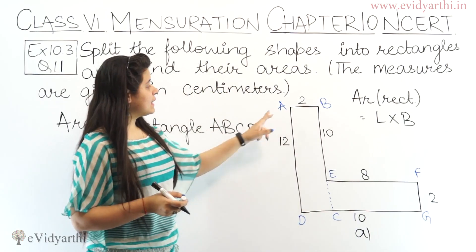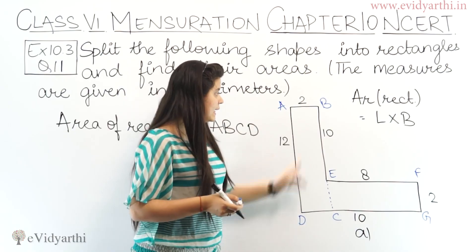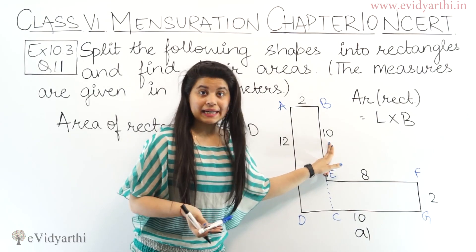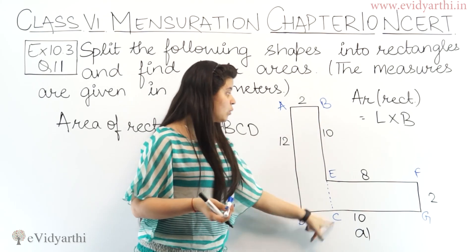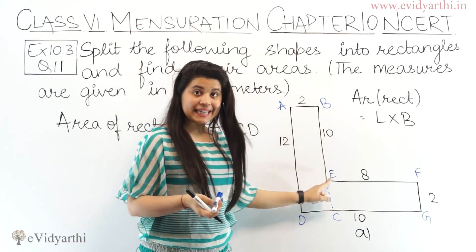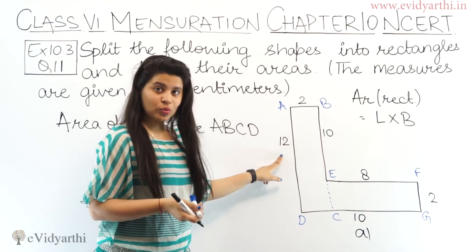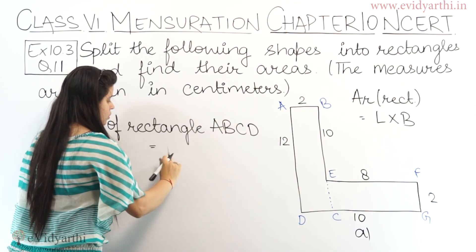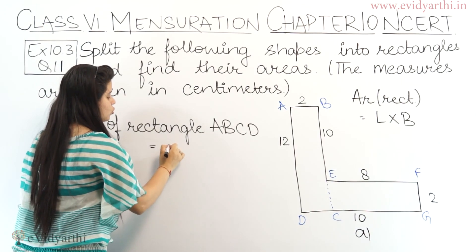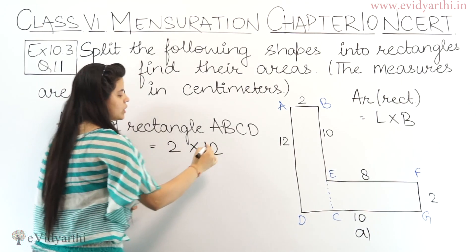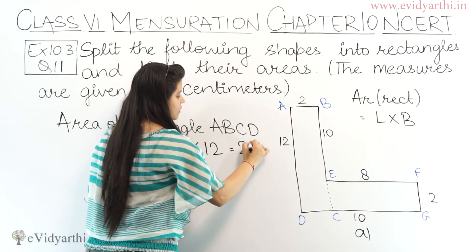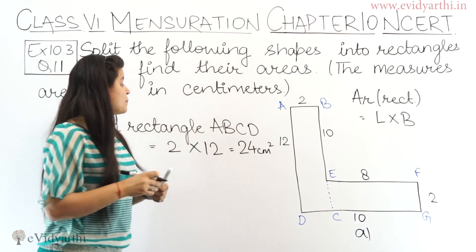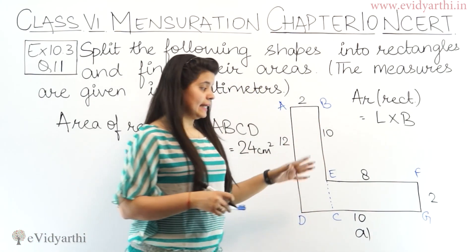For the breadth, we need AD or BC. If we take BC as 10 cm that would be wrong, because BC (the full side) is 10 cm for BE. So AD is 12 cm. Therefore, area of rectangle ABCD = length into breadth = 2 into 12 = 24 cm square. This is the area of our first rectangle.